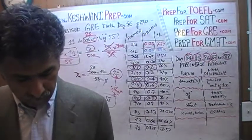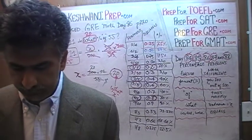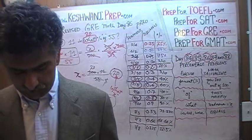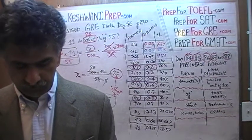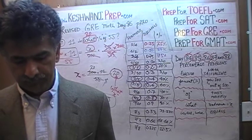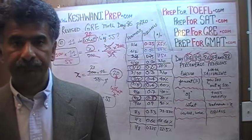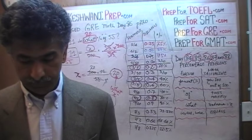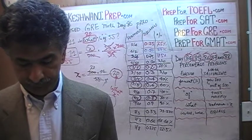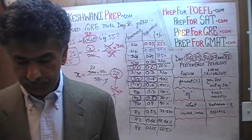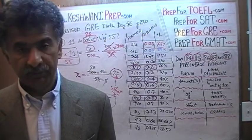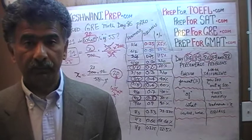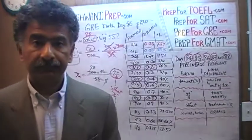Let's see what we have for tomorrow, day 87. Tomorrow we are going to do four bonus problems which are not in the book — bonus problems, if you will. Four bonus GRE percentage problems. I know you've always wanted them — this is your dream come true. I'll see you then. Bye.